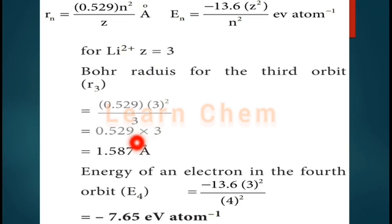Calculate the energy of the electron in the fourth orbit of Li²⁺. Using E = −13.6 × Z²/n², with Z = 3 and n = 4: E = −13.6 × 9/16 = −7.67 eV. I hope you all understand these concepts. Thanks for watching, students.